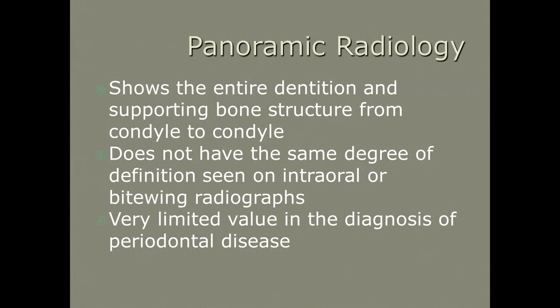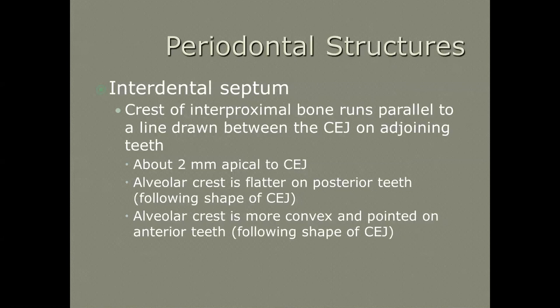Most offices today will have some sort of extra-oral radiograph available. Panoramic radiology shows the entire dentition and is used for limited periodontal screening, but for periodontal structures we really need good periapicals. We want to see what that crestal bone looks like, and that crestal bone is about two millimeters apical to the CEJ.